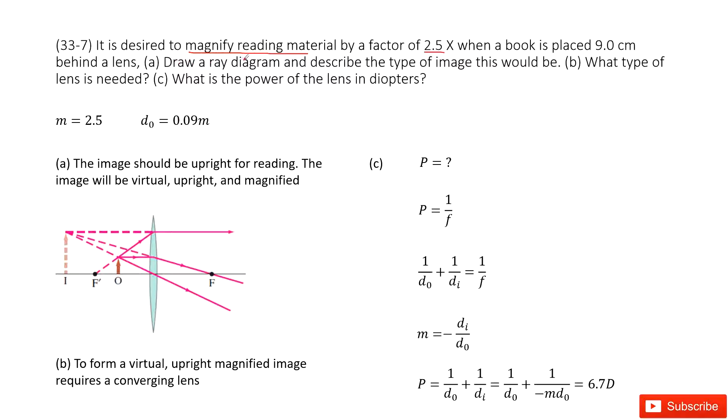First one, ask you to draw a picture to describe the image. What kind of image is it? See, as we talked about, the image should be upright for reading and it should be larger. So this image will be virtual. So it must be located there, right? Just behind the lens and this is object, this is image. We have two focal points and we just plot it like this one.